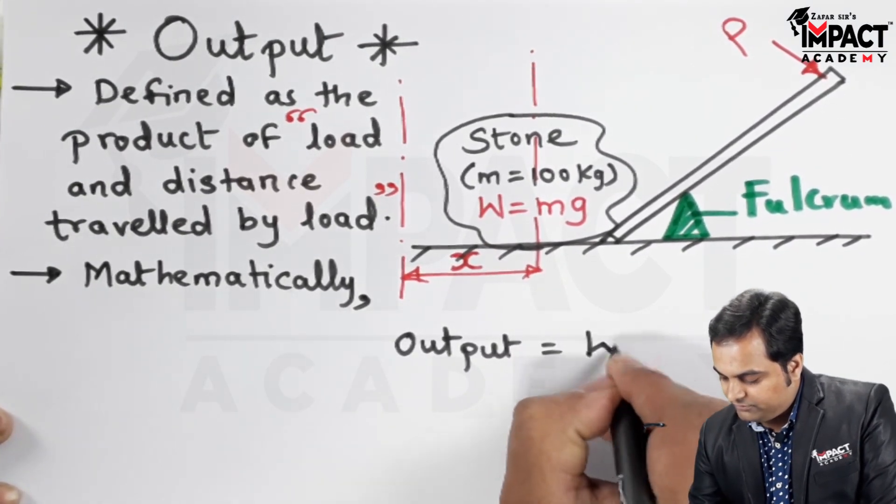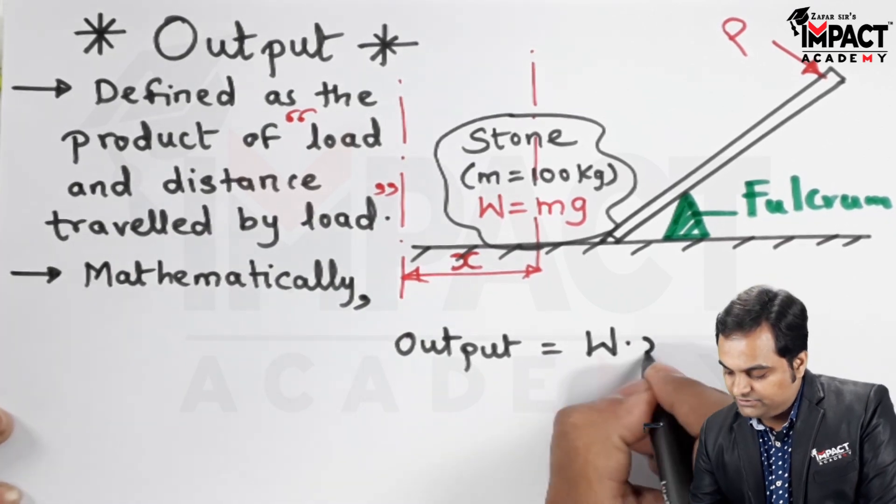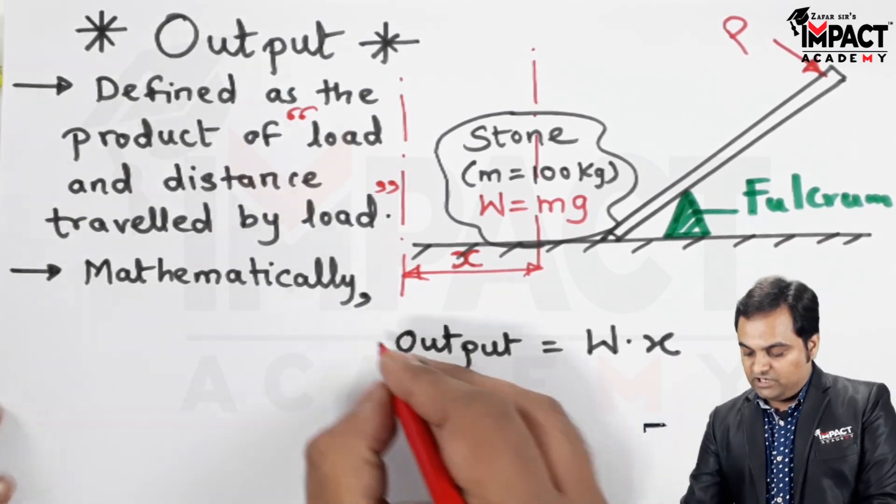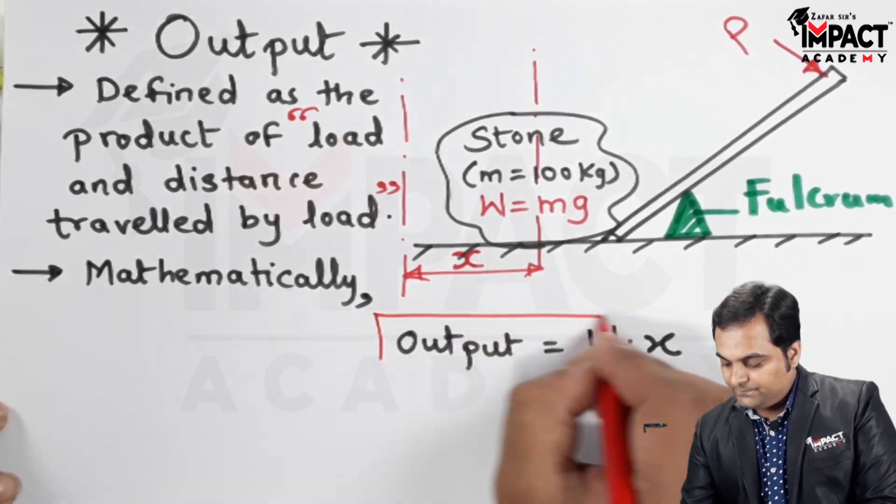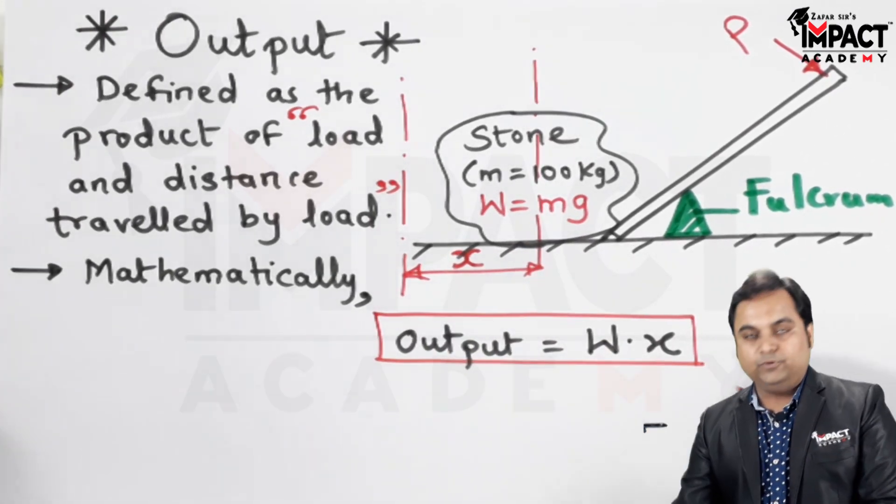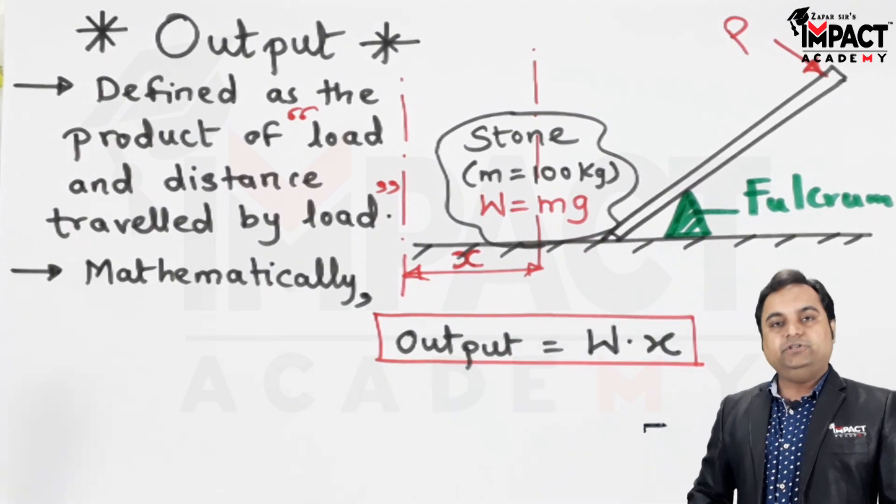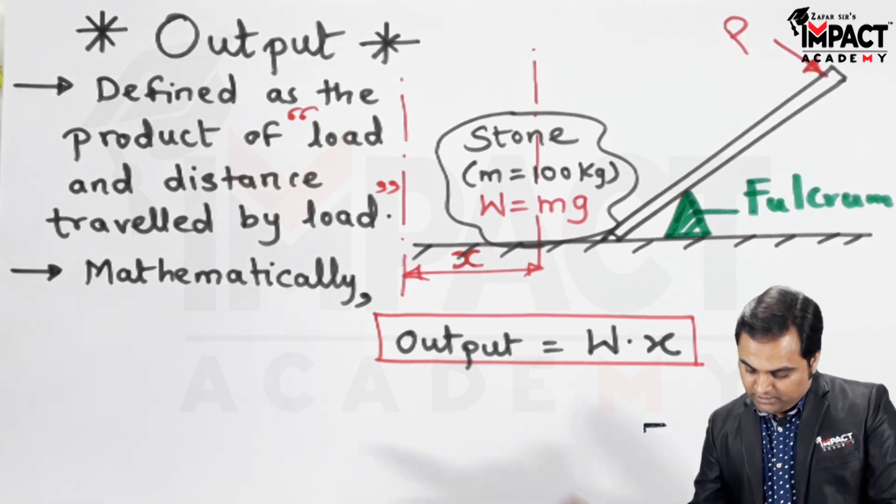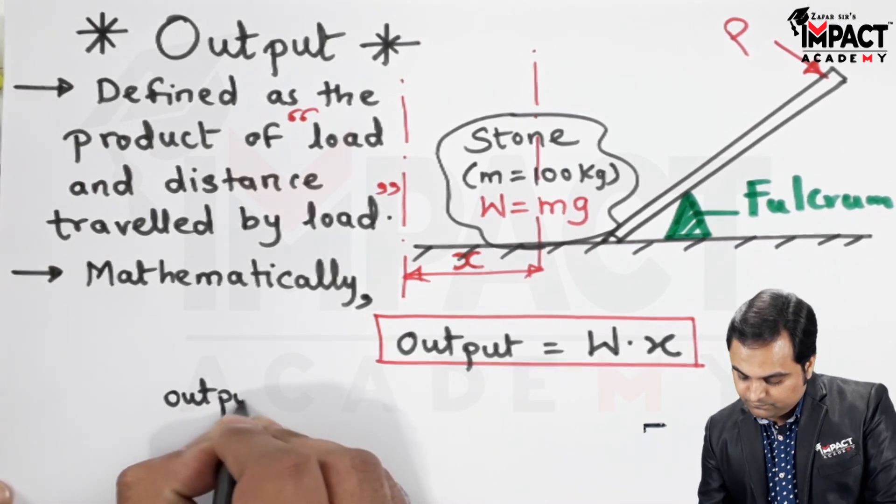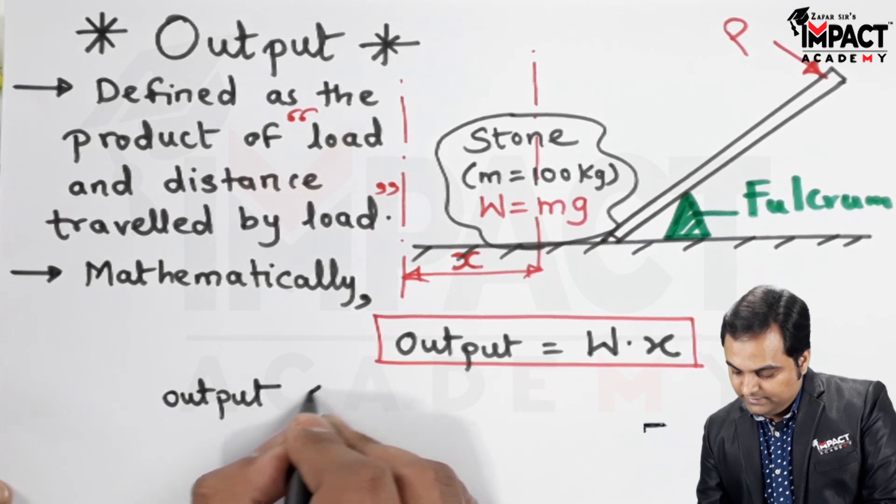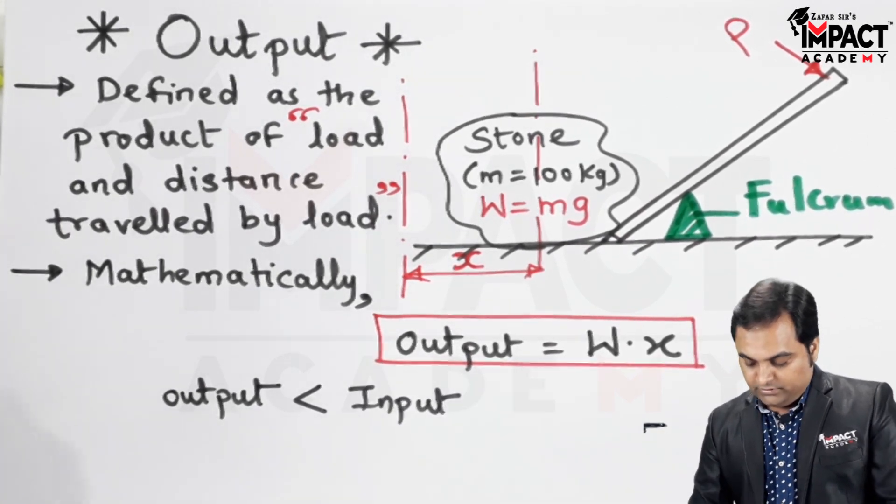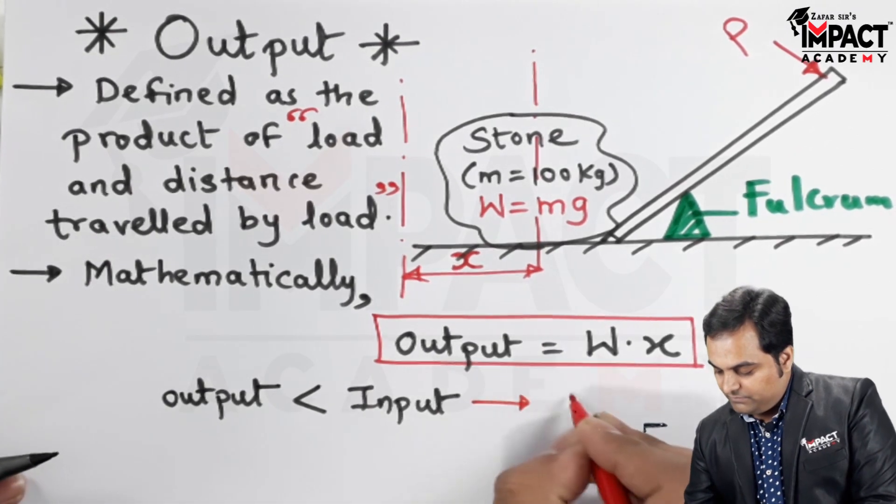Output is the product of load and the distance traveled by the load. And in case of simple machines, this output value would be less compared to the input. And input is given by effort into the distance traveled by effort, which is P into Y. And I'll write down that output would be less than the input in case of simple machines.